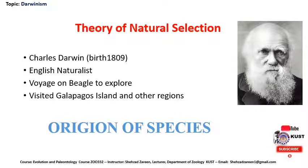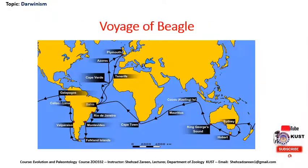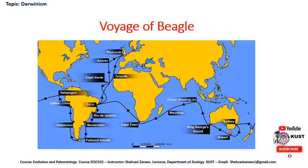He wrote a book entitled Origin of Species, in which Darwin explained how species are evolved from their ancestral species. This map shows the journey of Darwin's Beagle. He almost covered all important regions of the earth to study different animals and their origin.